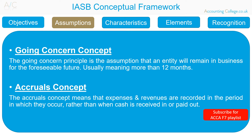Underlying Assumptions: Financial Statements are prepared under the Going Concern Basis. The Going Concern Principle is the assumption that an entity will remain in business for the foreseeable future, usually meaning more than 12 months. All Financial Statements except cash flow information must be prepared following the accruals basis. In accounting, the accruals concept means that expenses and revenues are recorded in the period in which they occur, rather than when the cash is received in or paid out.